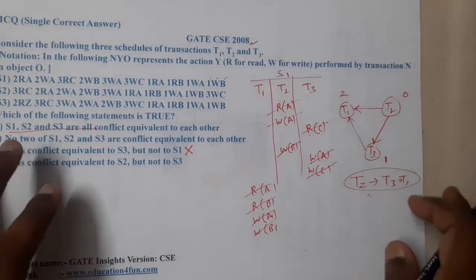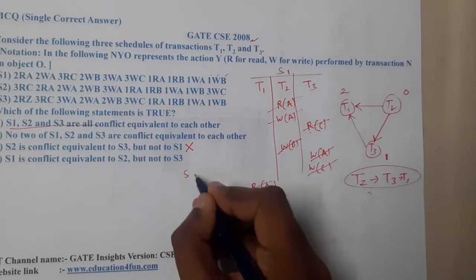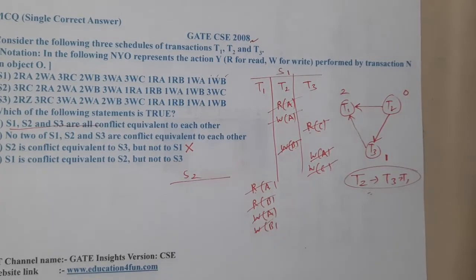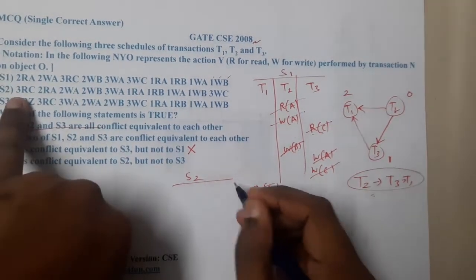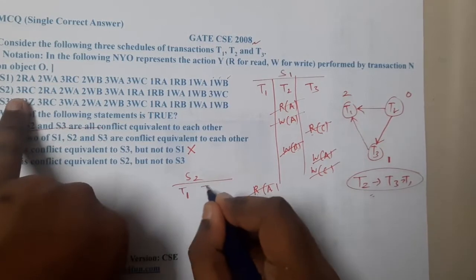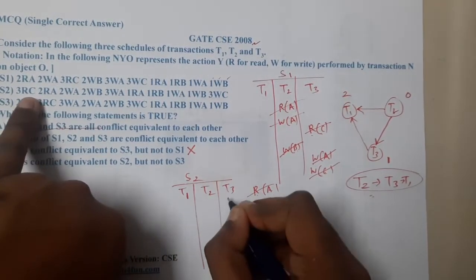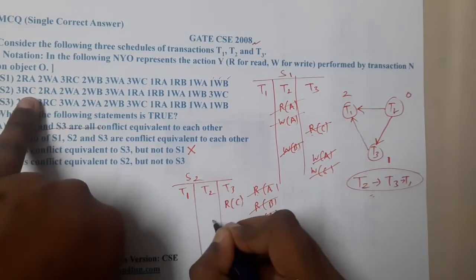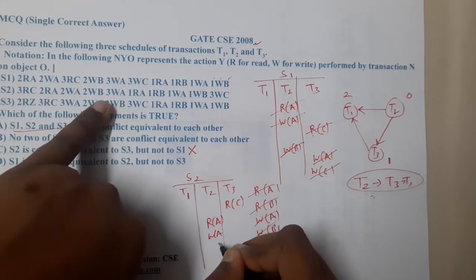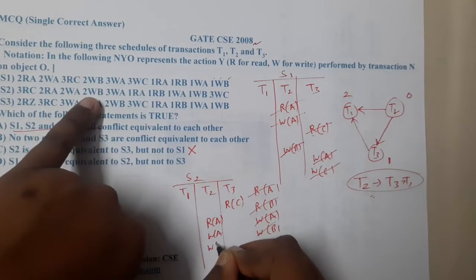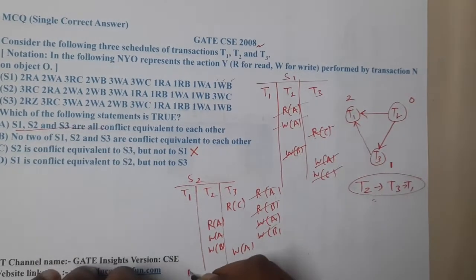We have eliminated one option using this method. Now let us move to S2. When it comes to S2, we also have T1, T2, and T3. The operations in S2 are: Read C, Read A, Write A, Write B, Write B, Write C.